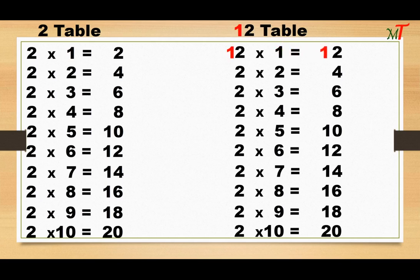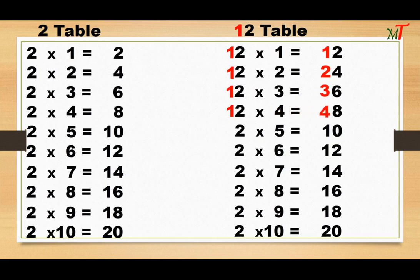1 plus 0 becomes 1 — 12 1s are 12. 2 plus 0 becomes 2 — 12 2s are 24. 3 plus 0 becomes 3 — 12 3s are 36. 4 plus 0 becomes 4 — 12 4s are 48.